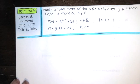We're asked to find the total mass of the wire with density ρ, whose shape is modeled by R.